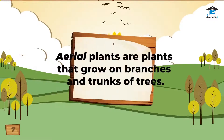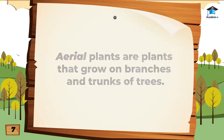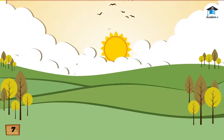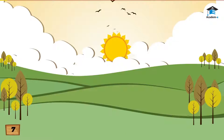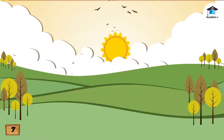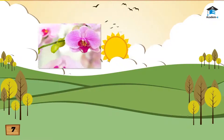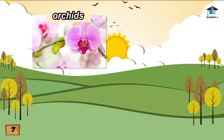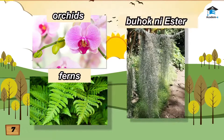Aerial plants are plants that grow on branches and trunks of trees. They can grow even when they are not planted in soil. Examples of these are orchids, ferns, and birds-nest fern.